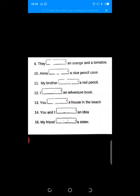Very well done. Anna dash a nice pencil case. Anna has a nice pencil case. Shabash. My brother dash a red pencil. Has a red pencil. Again, we have a magic pronoun. I dash an adventure book. I have an adventure book. Well done. You dash a house in the beach. You have a house in the beach. Because it is a magic pronoun.